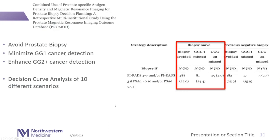The scenario closest to my practice: any RADS-4 or RADS-5 lesion gets a biopsy, as do individuals with a RADS-3 lesion. The closest in this analysis was RADS-3 with a PSA density greater than 0.1, or a negative MRI with PSA density greater than 0.2, for biopsy-naive individuals. The ProMod paper allows you to pick from 10 decision curve analyses which criteria best fit your practice to optimize detection of clinically significant disease while minimizing grade group 1 detection.